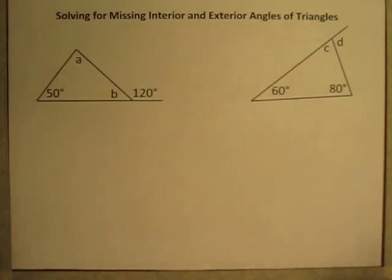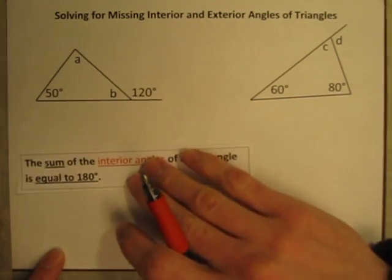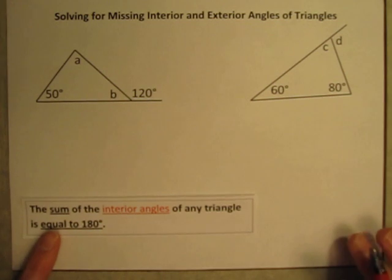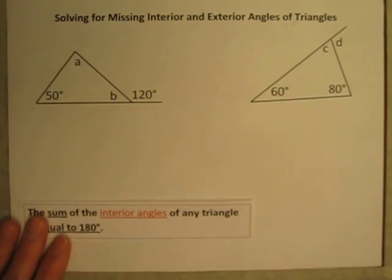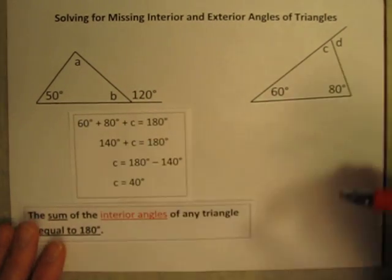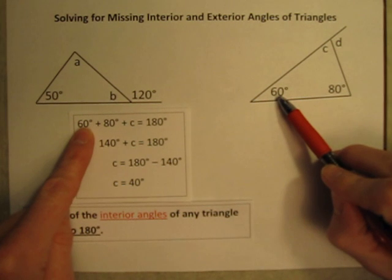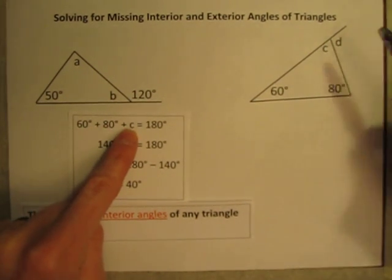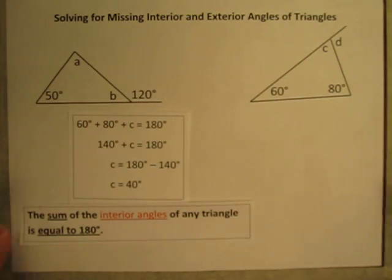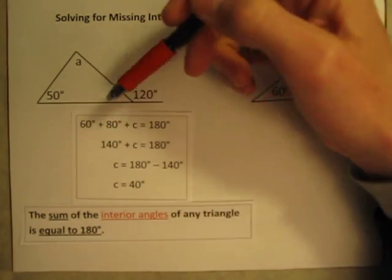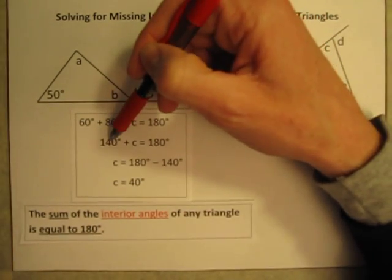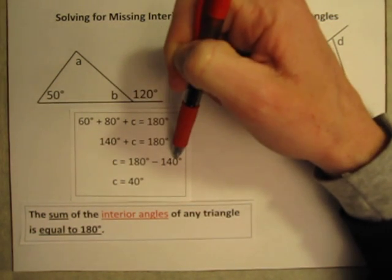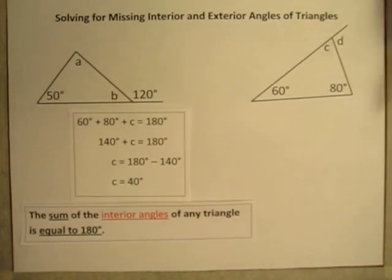I'm going to start with this fact here, that the sum of the angles inside the triangle is 180 degrees. So, over here, 60 plus 80 plus angle C equals 180 degrees. And 60 plus 80 is 140. So 140 plus C is 180. Or C is 180 minus 140. C has to be 40 degrees.